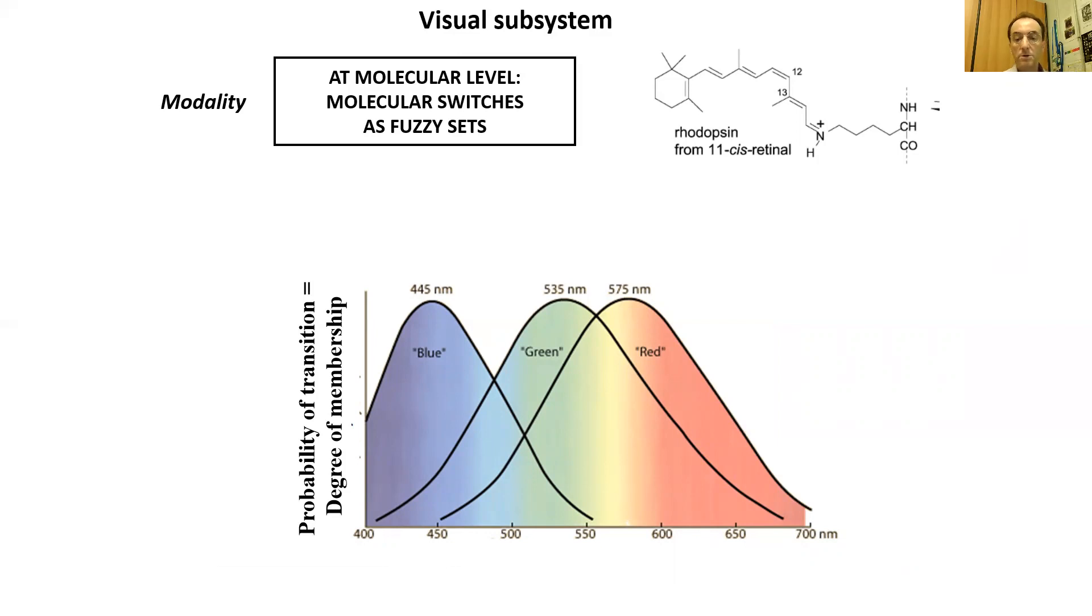The absorption spectra of the so-called blue, green, and red proteins behave like three fuzzy sets that granulate the visible region. Light beams having distinct spectral compositions belong to the three molecular fuzzy sets at different degrees. As an example, I show you here the case of pure green and pure red light. The modality of the signals is encoded as fuzzy information at the molecular level through the molecular fuzzy sets that work in parallel.